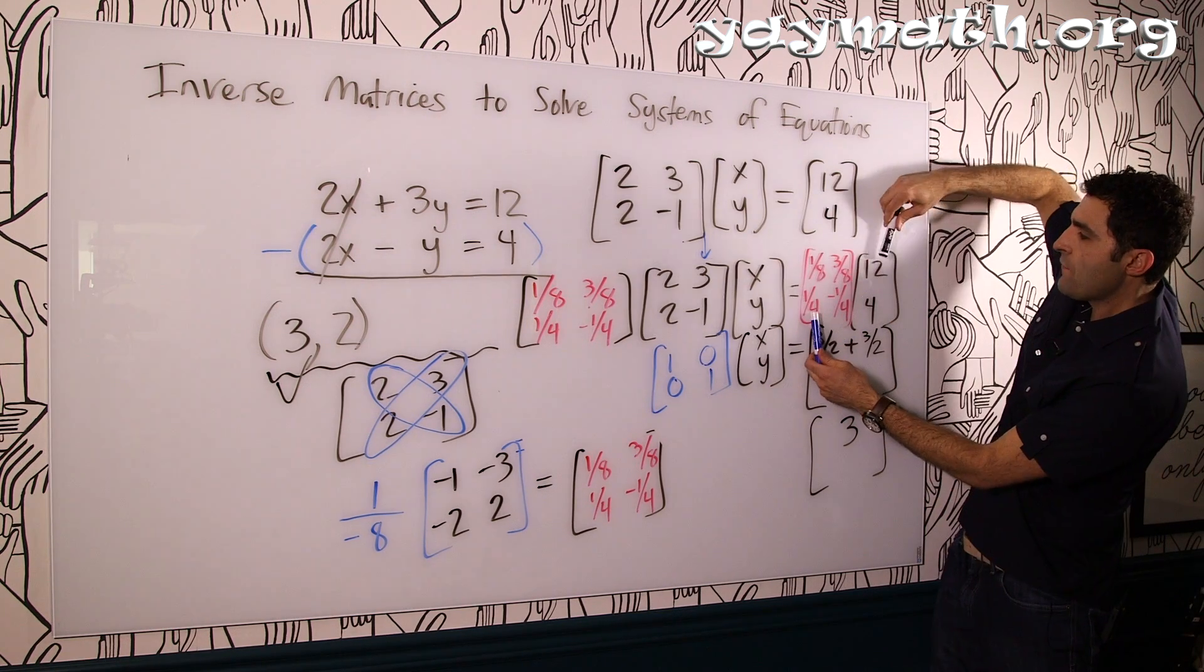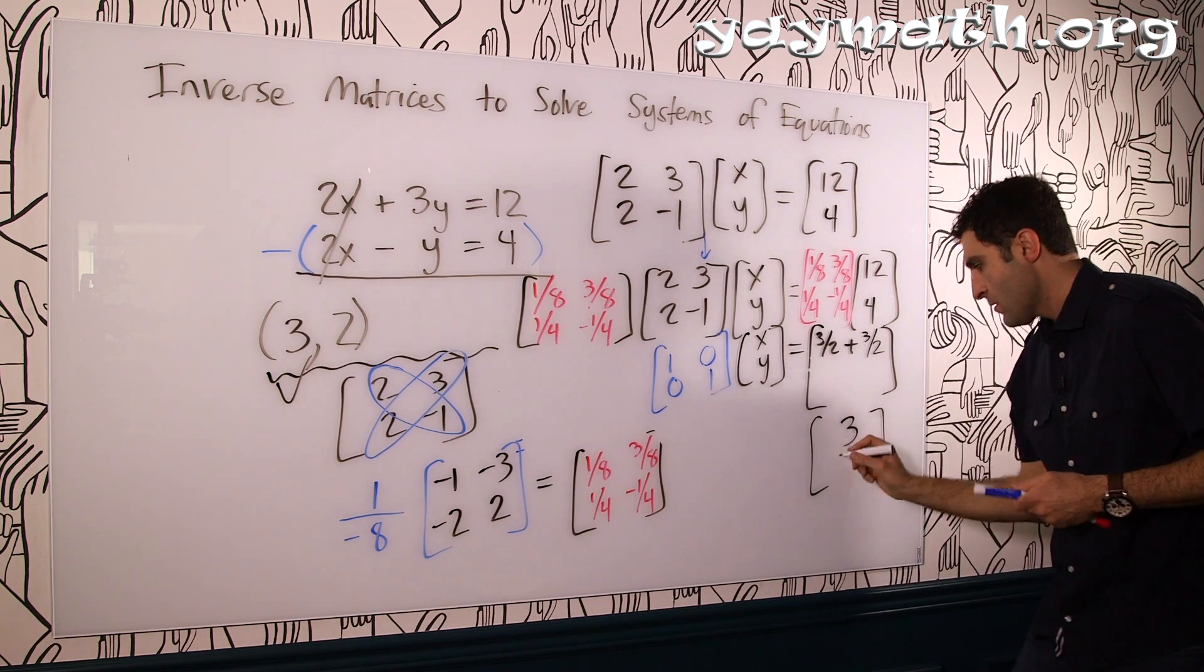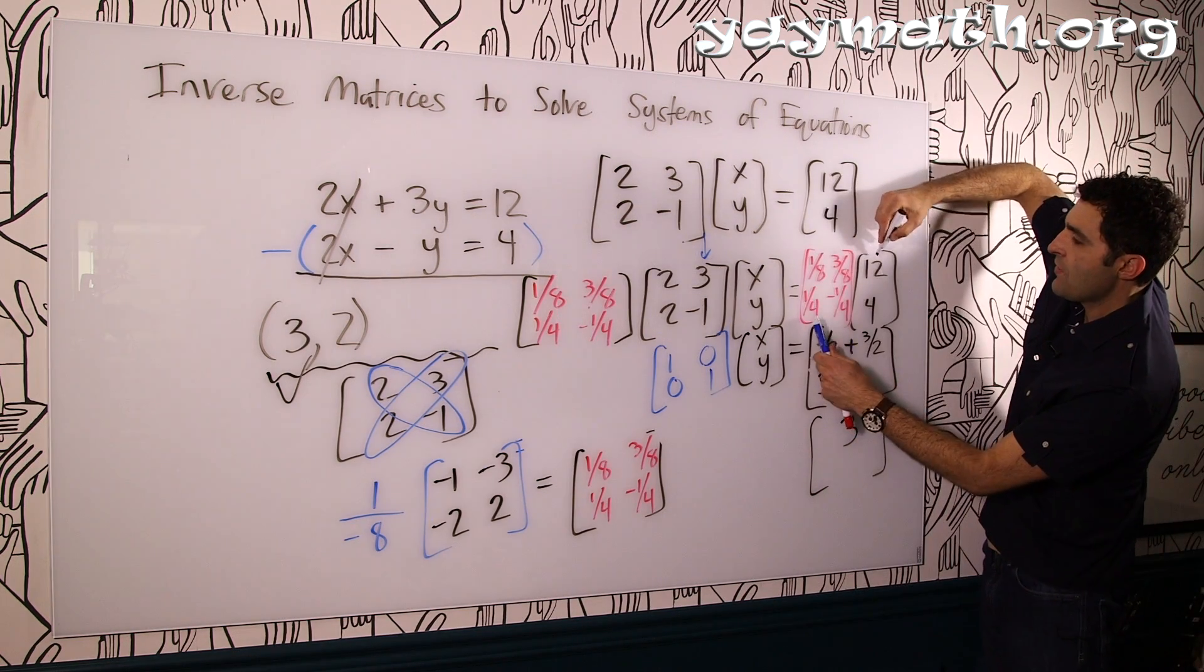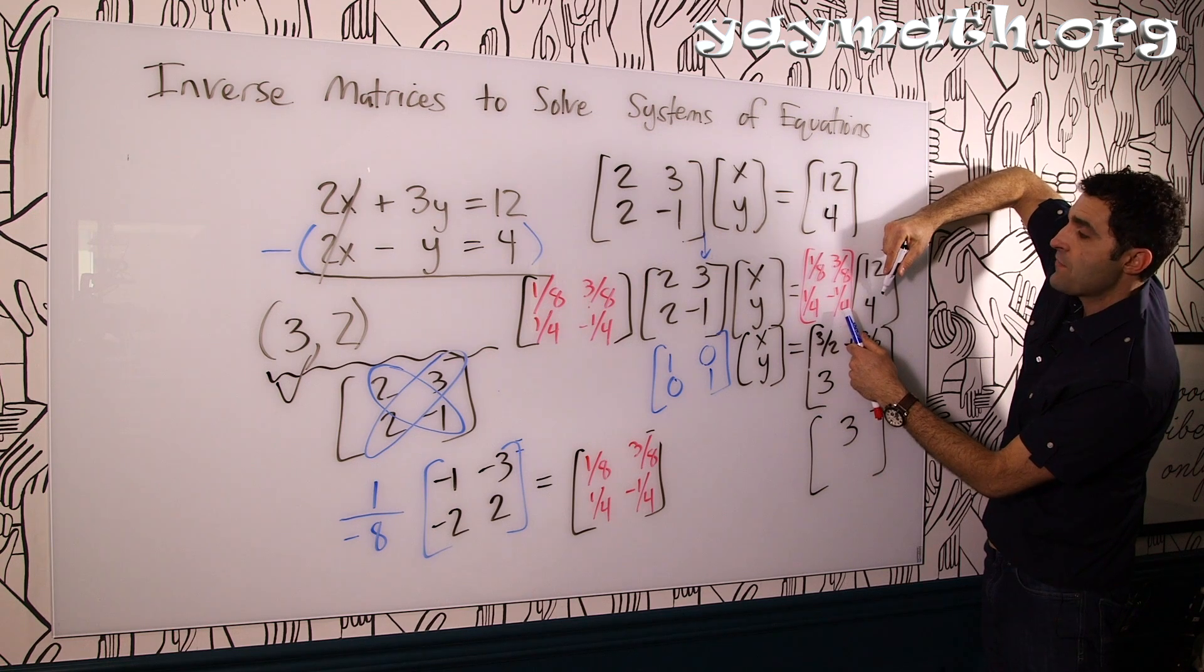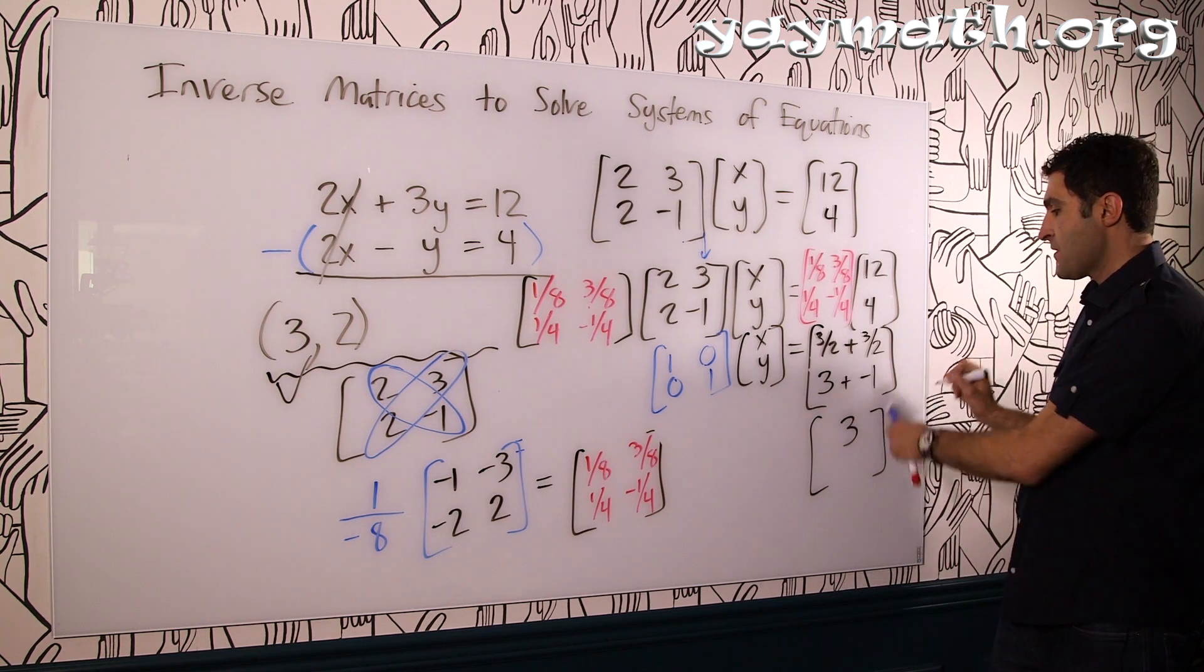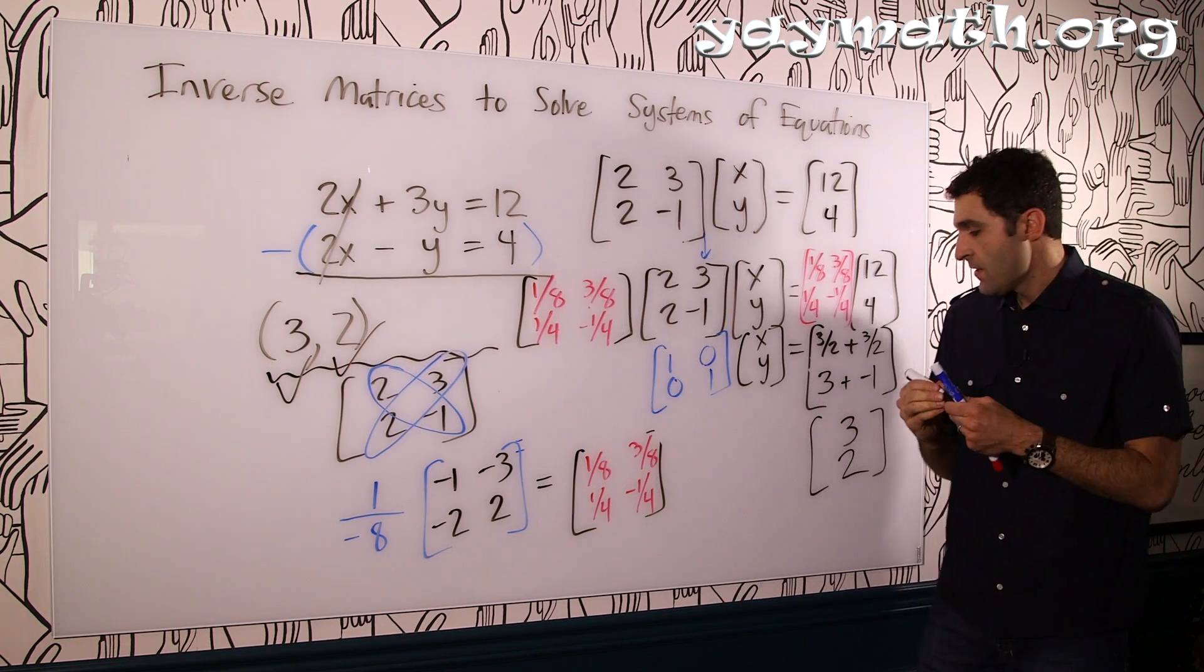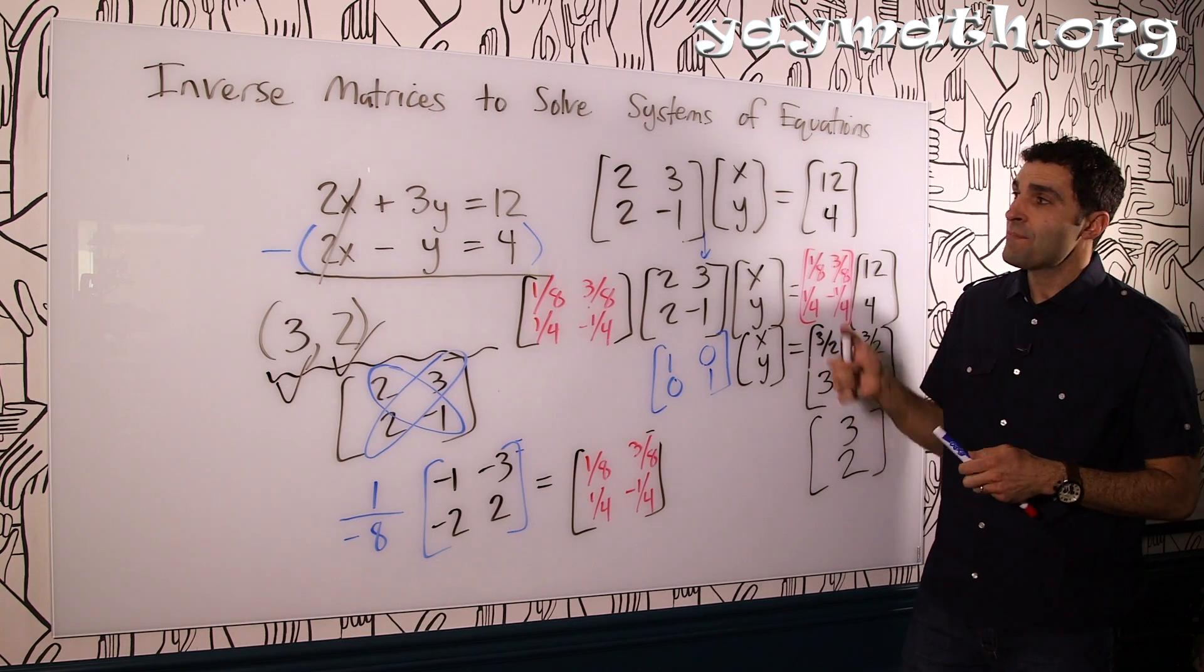Now let's make sure we get it for y. Rows times columns: 1/4 times 12 is 3. Put over here, 3 plus negative 1/4 times 4 is negative 1. 1 plus negative 1, 3 plus negative 1 is 2. And we got 2 here, awesome.